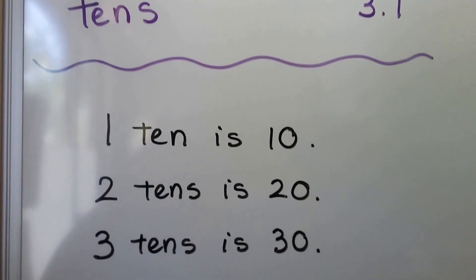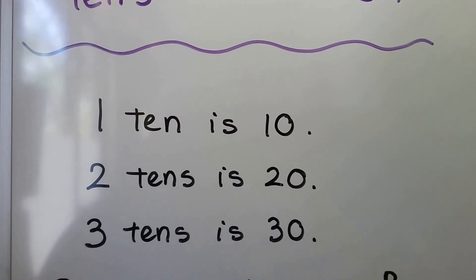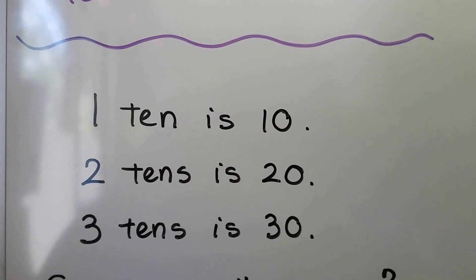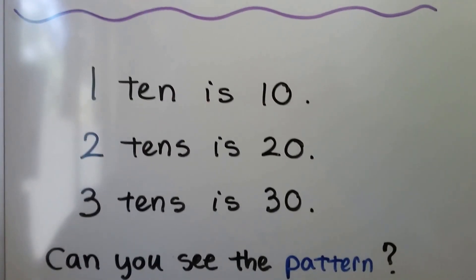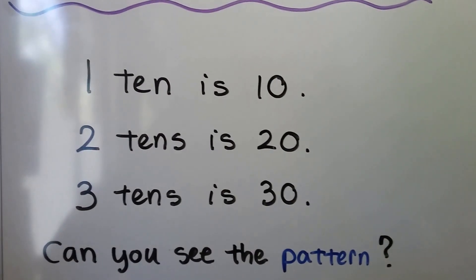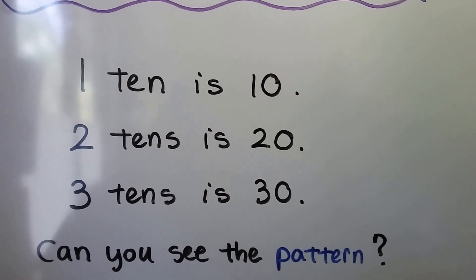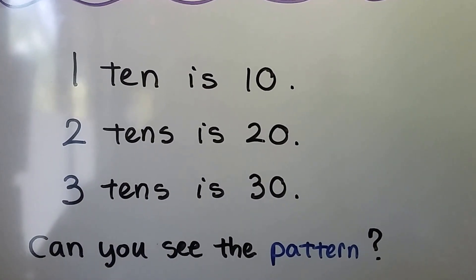We have one ten, it's a one and a zero. Two tens is a two and a zero. Three tens is a three and a zero. Can you see the pattern? Can you see how the ones place is a zero and the numbers are counting one, two, three?